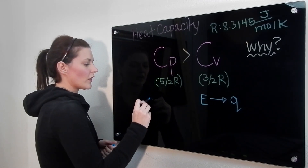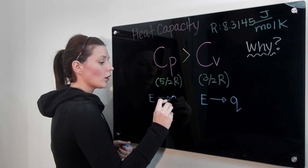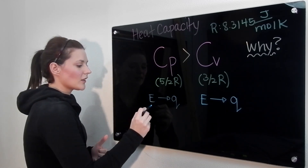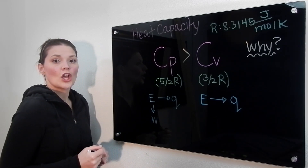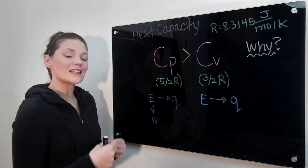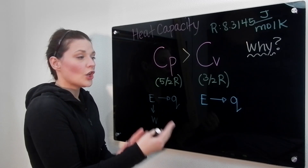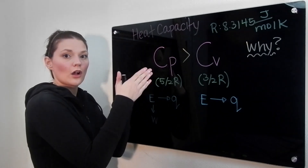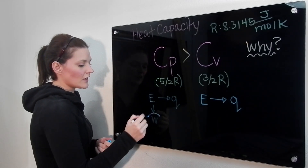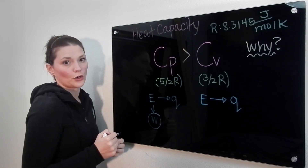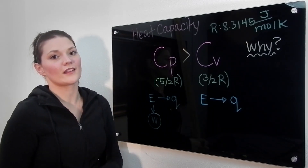When it's constant pressure, the energy will still go to produce some heat, but there will also be some loss to work. So in order to get exactly the same temperature change, you need to put more energy in the constant pressure circumstance to make up for this loss to work. And that's why Cp is bigger than Cv.